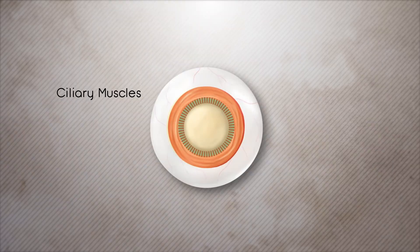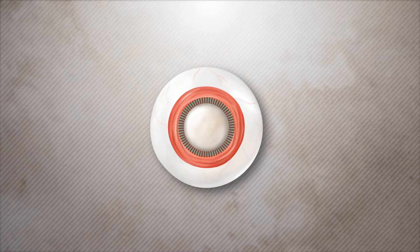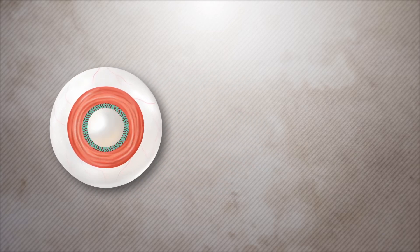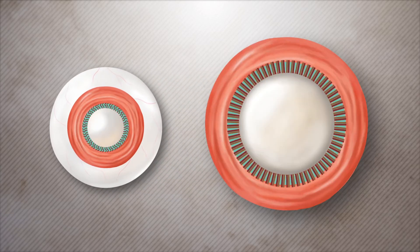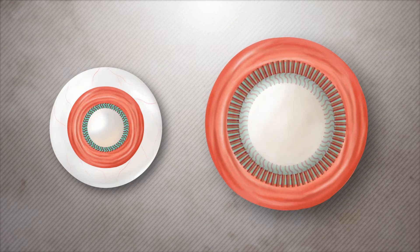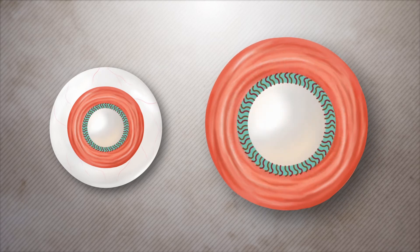The ciliary muscles and zonules help the lens focus on near and distant objects. When the eye focuses on a near object, the ciliary muscles will contract, causing the zonules to relax. The lens changes shape and becomes rounder.